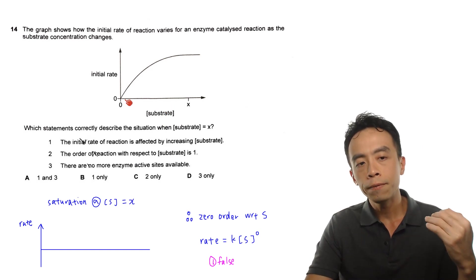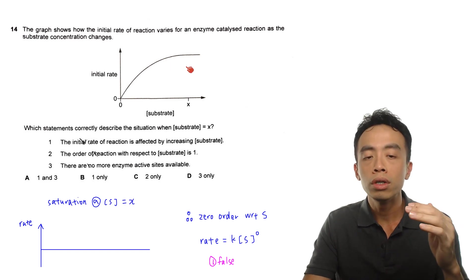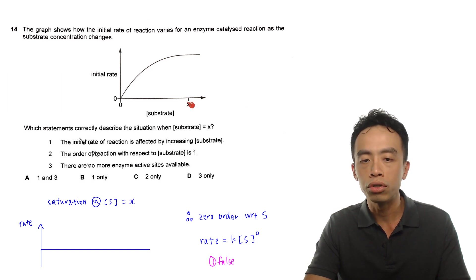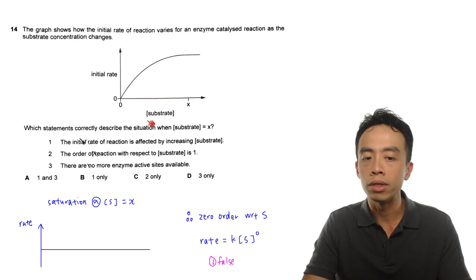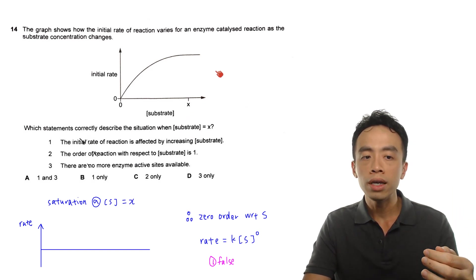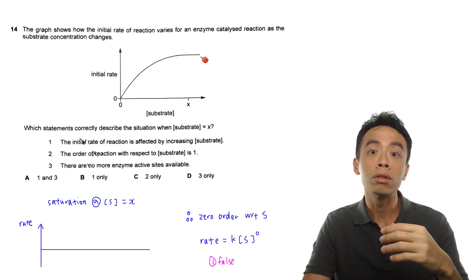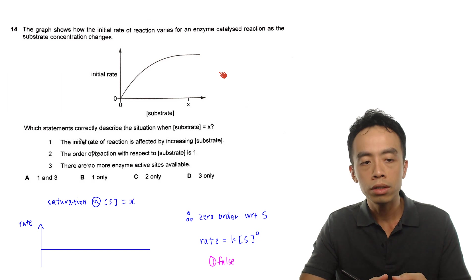Eventually the rate of the reaction will taper off, and it stabilizes and reaches a constant value. This is where the concentration of the substrate reaches X. This question is asking which statements correctly describe the situation when the concentration of substrate is equal to X — when substrate concentration is relatively high and the initial rate is more or less a constant, horizontal value. We have three statements to consider.